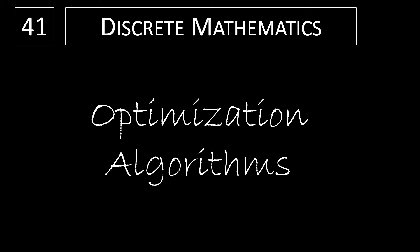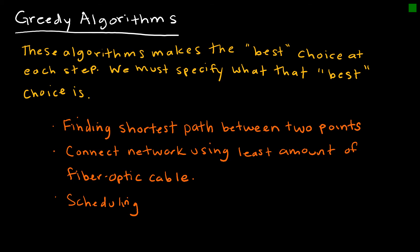In this video, we're going to take a look at some optimization algorithms. A greedy algorithm is one that makes the best choice at each step, and we must, as the programmer or the mathematician, determine what that best choice is.